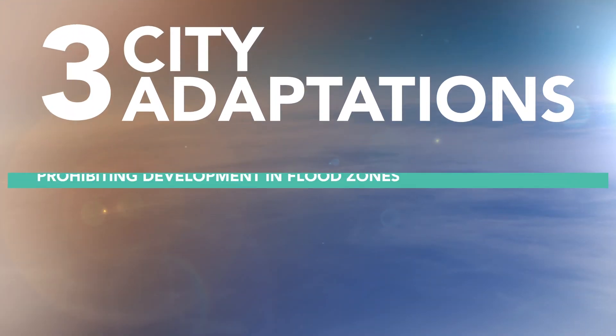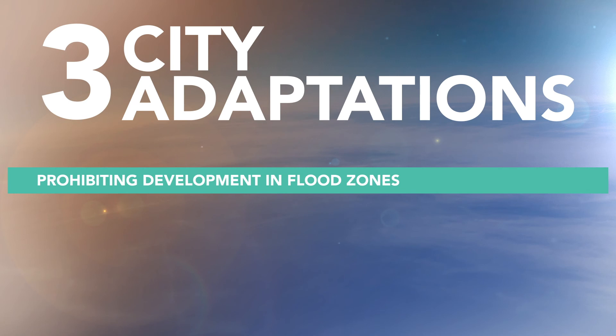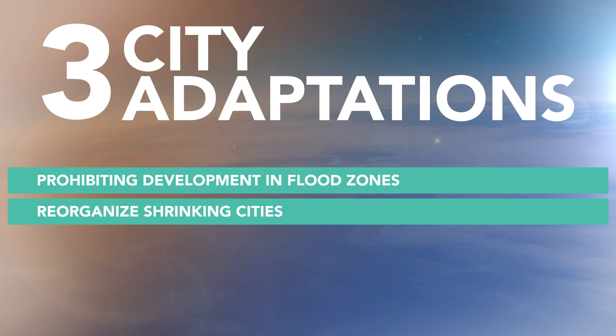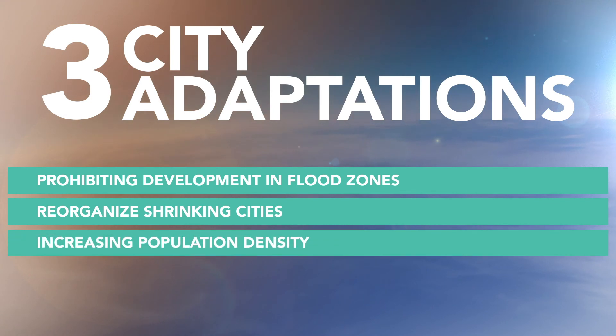Looking at human communities, we see similar physical changes taking place. In some places, the model of human settlement is being reorganized to reduce the impact of environmental changes on communities. Such adaptations may include prohibiting development in flood zones, reorganizing cities that are shrinking as a result of population decline, or increasing population density to promote walkability and reduce reliance on private automobiles.